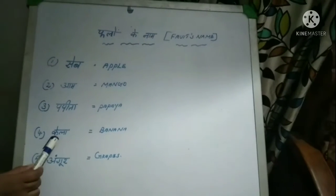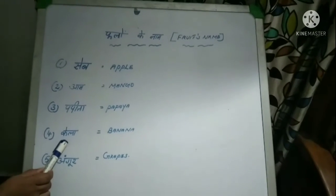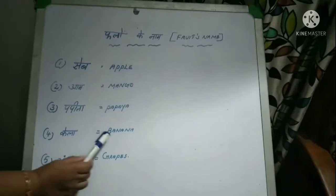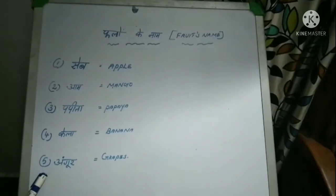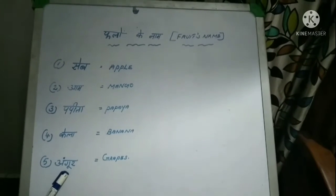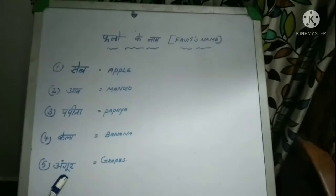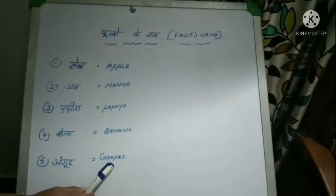Number 4: Kela. Kela means Banana. Last one, number 5: Angur. Angur means Grapes.